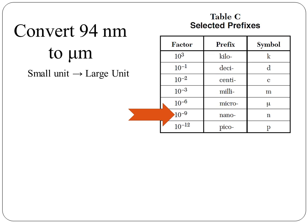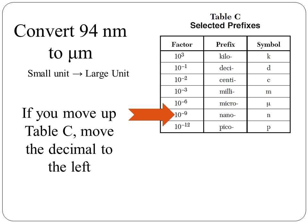This will tell me the number of spaces to move my decimal point when making the conversion. So if you are moving up the table from nano to micro, you need your number to go from a larger number to a smaller number. So we are going to move the decimal point to the left.